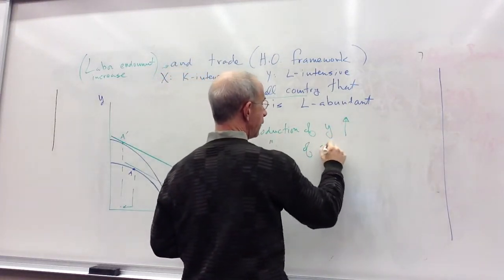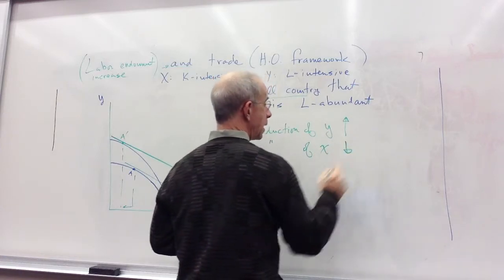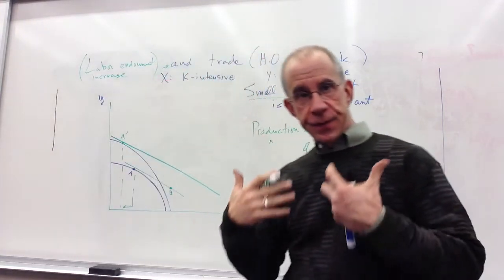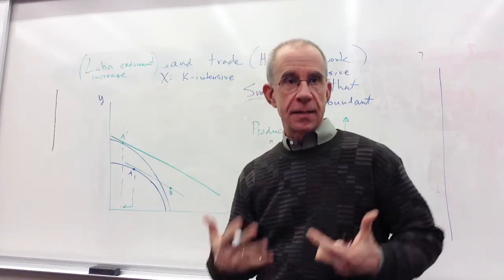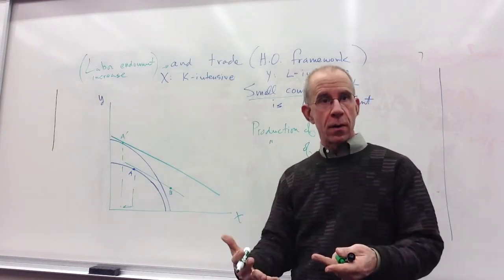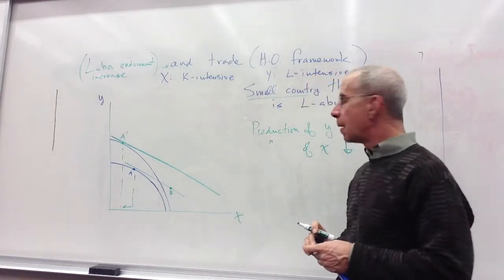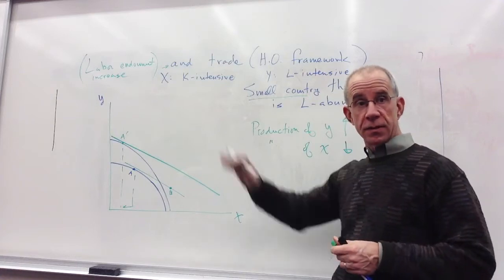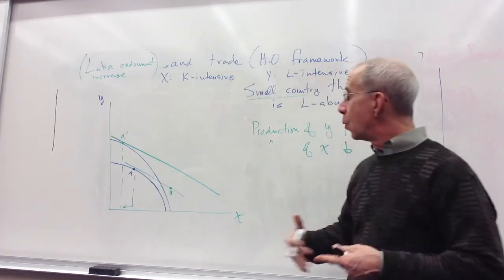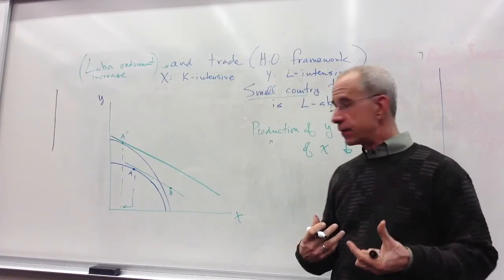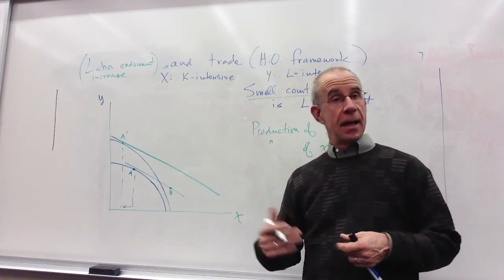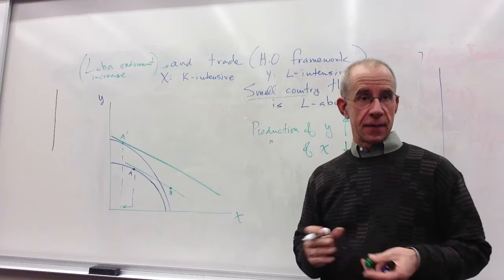The production of X, the imported good, is going to go down. So what you have in this situation is that the stuff that the country makes, this labor-abundant country, is going to expand. They're going to produce more of the labor-intensive good as a consequence of this increase in the labor endowment. As they expand Y production, they're going to pull some capital out of the X sector to use in combination with the labor that comes in, and there's going to be a reduction in the amount of X as a consequence.